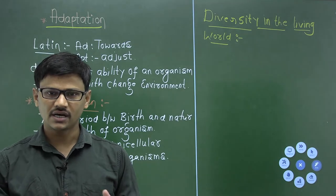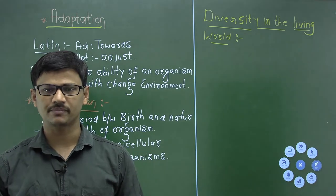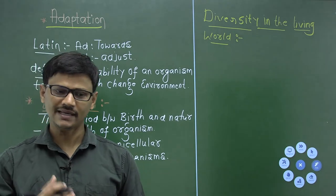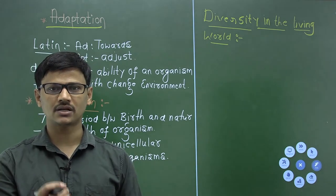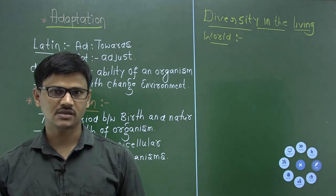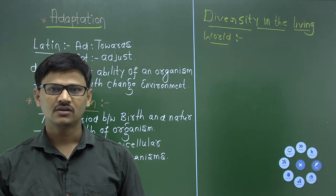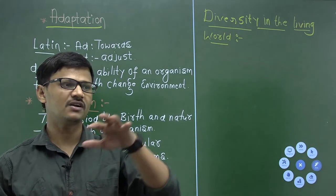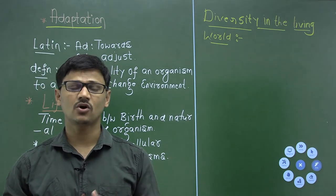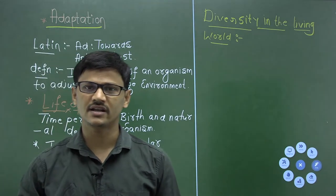The earth is full of different kinds of living organisms. Each type of living organism — plant, animal, or microorganism — represents one particular species. In a second-year topic on biodiversity and its conservation, there is a concept called the species-area relationship, which states that if you increase the area of exploration, you will find more and more species.